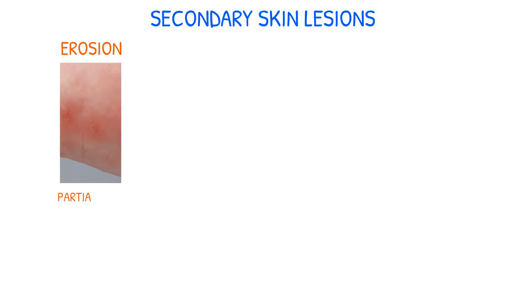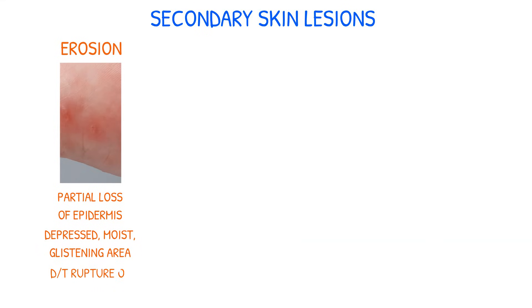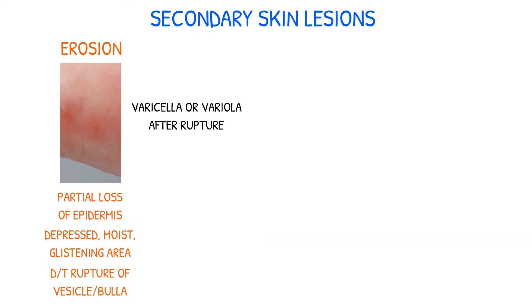An erosion is a loss of part of the epidermis and appears as a depressed, moist, glistening area. This follows the rupture of a vesicle or bulla. An example of erosion is varicella or variola after rupture.